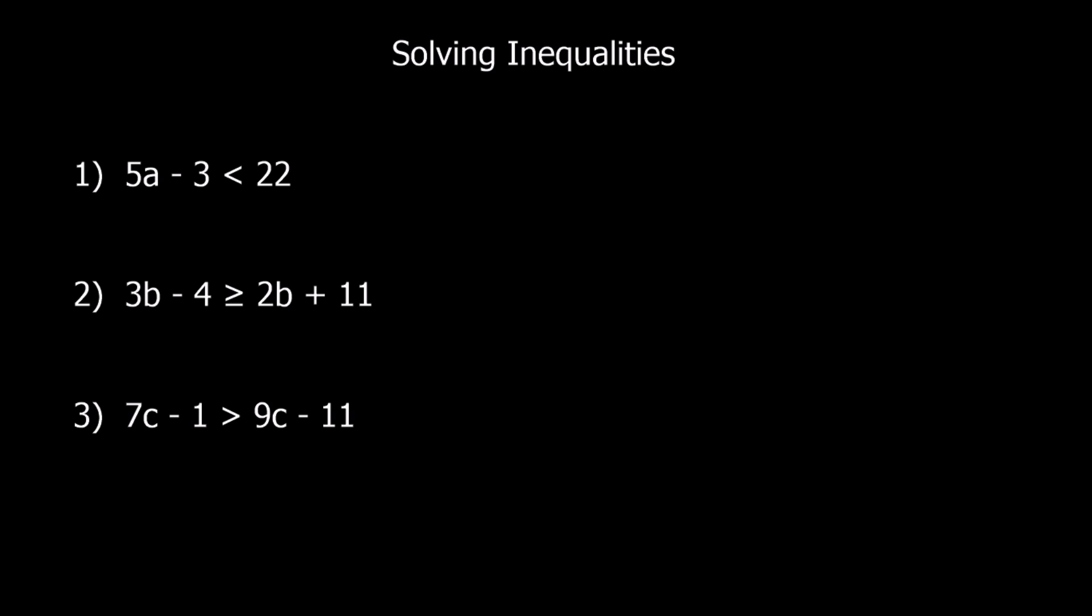Okay, see if you can solve these ones. Okay, first step here, I'm going to plus 3 to both sides. Plus 3 plus 3. So that gives me 5a is less than 25. Then I'm going to divide both sides by 5, which gives me a is less than 5.